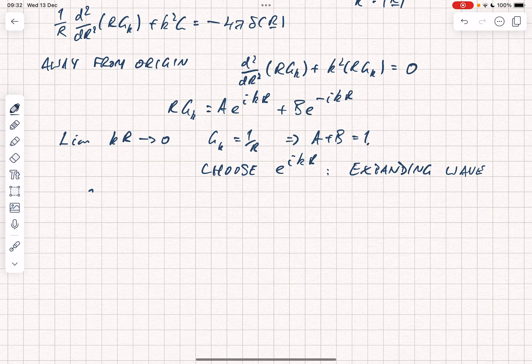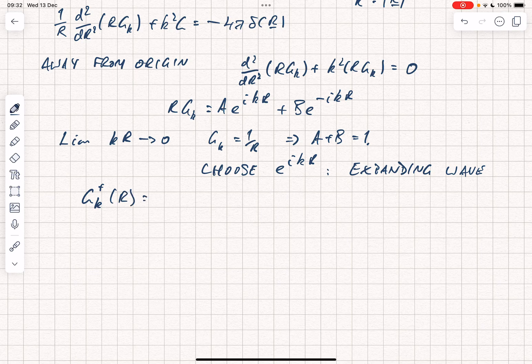Therefore we can write our solution as gk of r is e to the i kr over r.